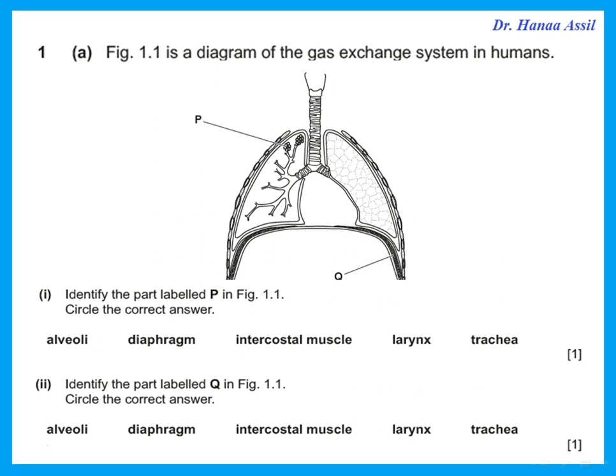The first question was: figure 1.1 is a diagram of the gas exchange system of humans. Identify the part labeled P. If you look at what P is, P is that thing that looks like small sacks — that is the alveoli in the lungs.